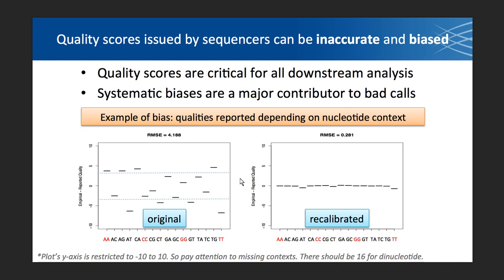Here we are showing an example of bias based on nucleotide context, and this is one of the things that BQSR looks at. On the x-axis is the two-base or dinucleotide context in which the call was made — the base immediately preceding the call and the base of the call in the read. On the y-axis, we are plotting the difference between the empirical base quality and the reported quality. The range is around plus 5 and minus 5, and what we want is for this range to be tightened where there is no difference between the corrected base quality and the empirical base quality.